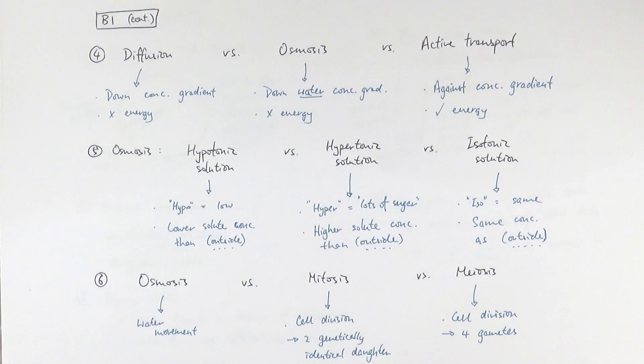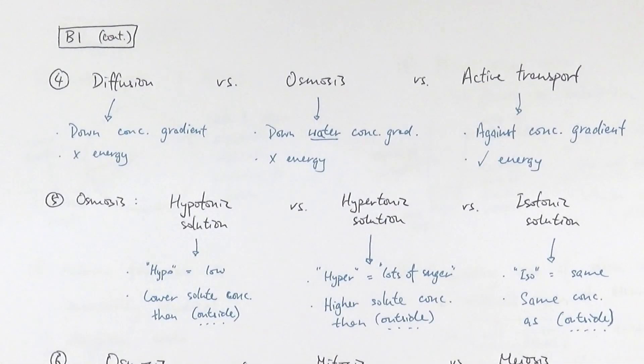And this next part will be focusing on cell transport, so like diffusion, osmosis and active transport. The first one is about distinguishing between diffusion, osmosis and active transport. Very basic things, things that hopefully you are very aware of when you're doing revision already in the first place. Diffusion is about down the concentration gradient and they don't use energy.